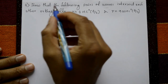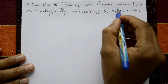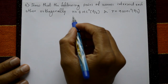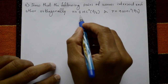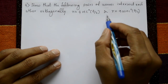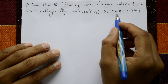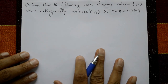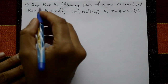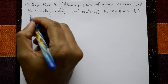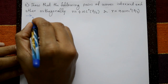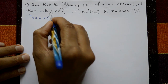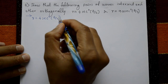Second problem: Show that the following pair of curves intersect each other orthogonally. The two curves are r = 4·sec²(θ/2) and r = 9·cosec²(θ/2). For the first curve, r = 4·sec²(θ/2), taking log on both sides.